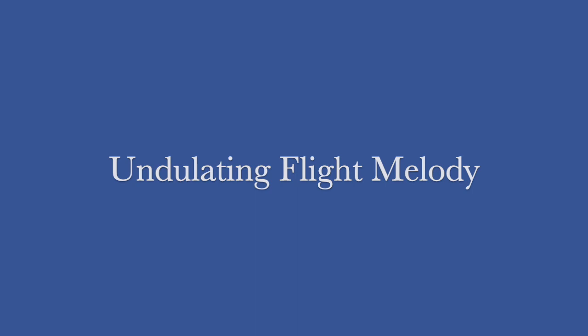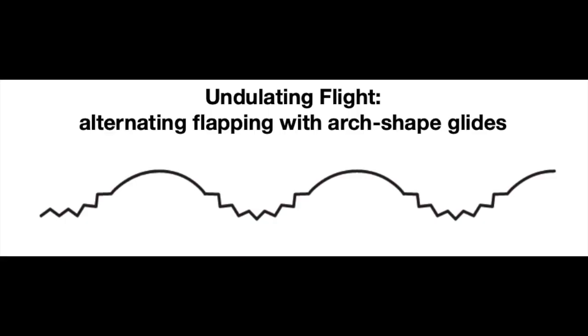Our next flight pattern is very similar to the flap and glide pattern. It's called undulating flight. Notice how the glides no longer move straight across in line with the flapping. Instead the bird creates a little rise during the glide. The music will also imitate this glide motion with melody notes that rise up higher from the flapping notes. Let's watch and listen to the undulating flight pattern.